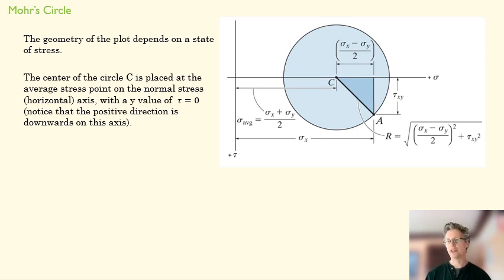The x-axis is normal stress. If we know the state of stress at one place, we can actually plot sigma average, so we can find C. And then we know A, because we know our shear stress and our normal stress in the x-direction.